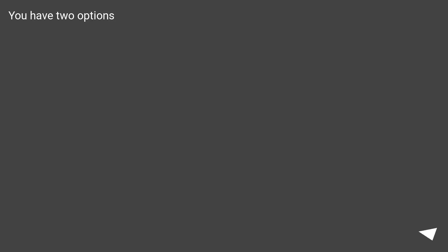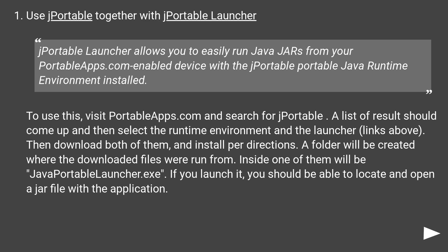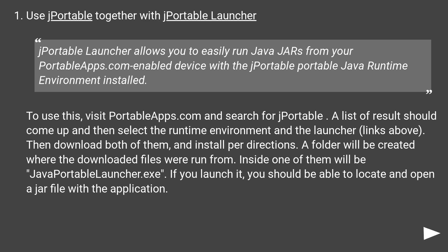You have two options. Use JPortable together with JPortable Launcher. JPortable Launcher allows you to easily run Java JARs from your PortableApps.com enabled device with the JPortable Portable Java Runtime Environment installed. To use this, visit PortableApps.com and search for JPortable. A list of results should come up — select the runtime environment and the launcher links. Download both of them and install per directions. A folder will be created where the downloaded files were run from. Inside one of them will be JavaPortableLauncher.exe. If you launch it, you should be able to locate and open a JAR file with the application.